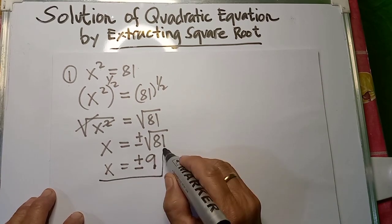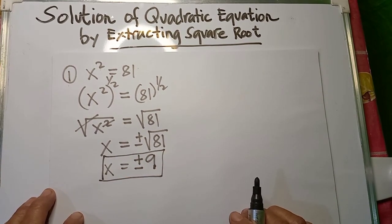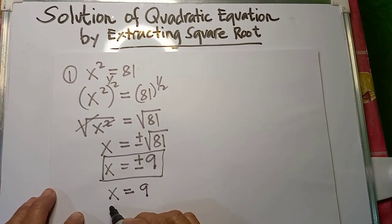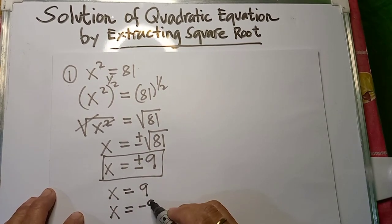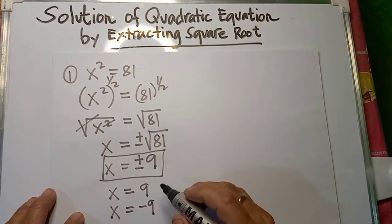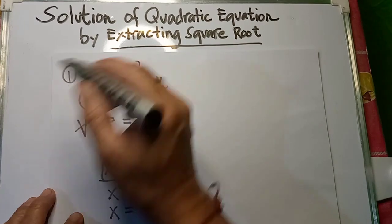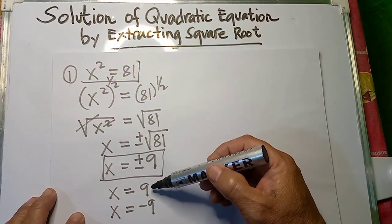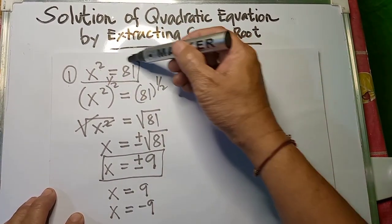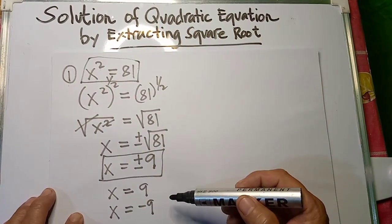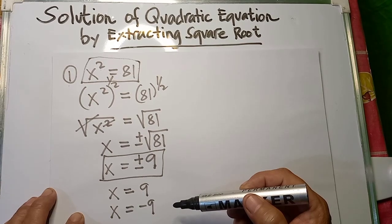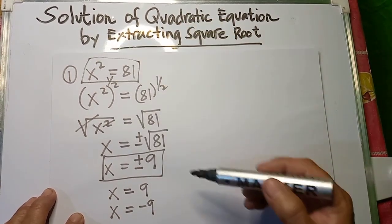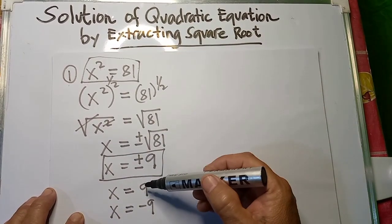So we have two values of x here. You may rewrite that as x is equal to positive 9, and we have another value of x which is equal to negative 9. So we can check this using our original equation. We have x squared is equal to 81. Substituting positive 9, the answer is still equal to 81. And for the other value, negative 9, the result is also equal to 81. So the values of x are positive 9 and negative 9.